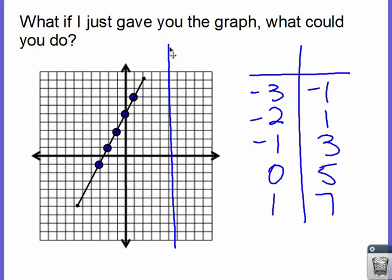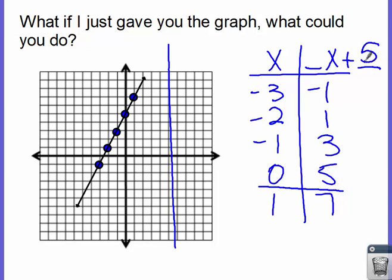So now we have a t-chart. From this t-chart, we can write the expression blank x plus blank. This value here is our y-intercept — it's the y-value when x is 0. I come down and find the y-value when x is 0, and it's 5. We can also find this y-intercept value from the graph: the point 0, 5 is right here, where the graph crosses the y-axis. Because intercept and intersect are synonyms — they mean the same thing.